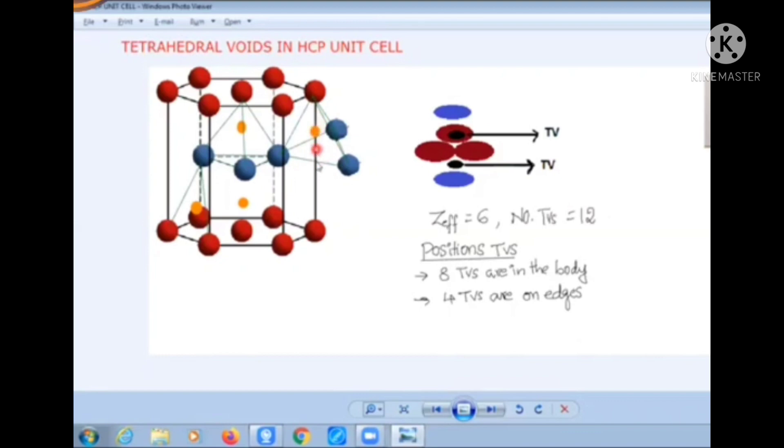each edge will carry two tetrahedral voids. Each edge will get two tetrahedral voids. So totally there are six edges, side edges. Six edges are there.